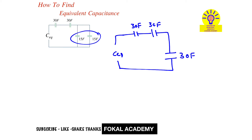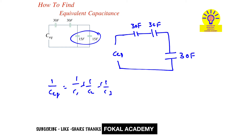Now observe here — there are three components which are in series. Whenever capacitor components are in series, the equivalent capacitance is given by: 1 over C_equivalent equals the inverse of the sum of all inverse components, that is 1/C1 plus 1/C2 plus 1/C3. Let's assume this is C1, this is C2, and this is C3.